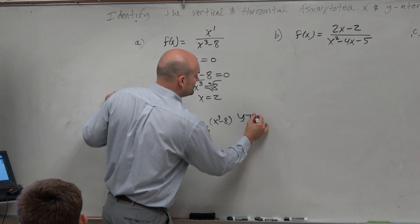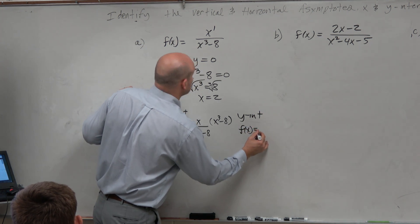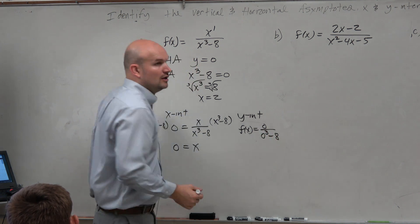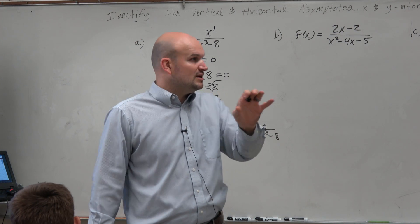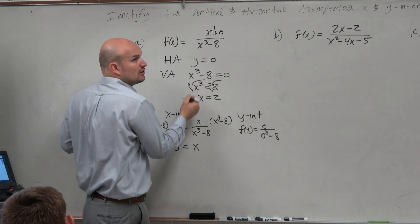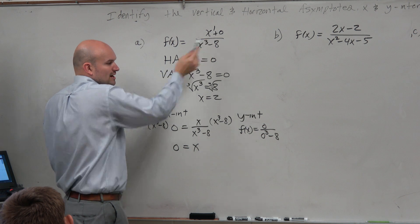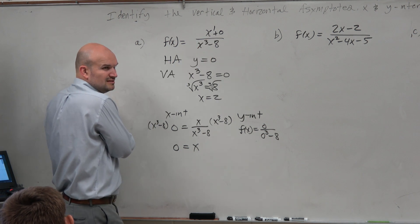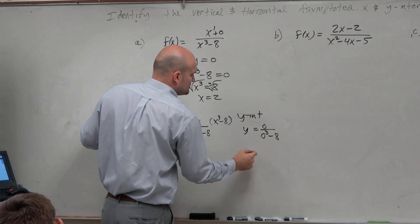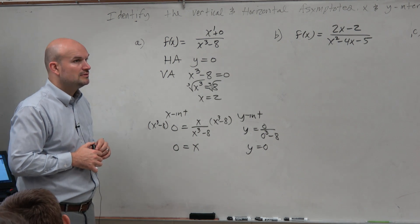But to find the y-intercept here, we talked about that's when x is equal to 0. So f of x is equal to 0 over 0 cubed minus 8. Or what we talked about was it's really the constant over the constant. Does this have a constant? No. So really, the constant you could say is 0. But again, remember, if you're plugging everything in for 0, you have 0 over 8. So 0 over 8 is 0. Now, I said y-intercept, so I'm going to use y instead of f of x. So y is equal to 0.